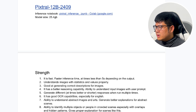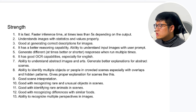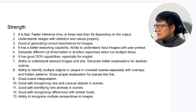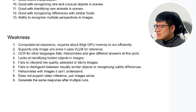Overall, Pixtral 12B has different strengths and weaknesses. Its strengths are that it's very fast in inference, good at generating correct image descriptions, has better reasoning capabilities and understanding of input images and user prompts, has good OCR capabilities, can understand abstract art, is good at identifying multiple objects or people in crowded scenes, is good at scene interpretation, and is good at recognizing rare and unusual objects and similar foods.